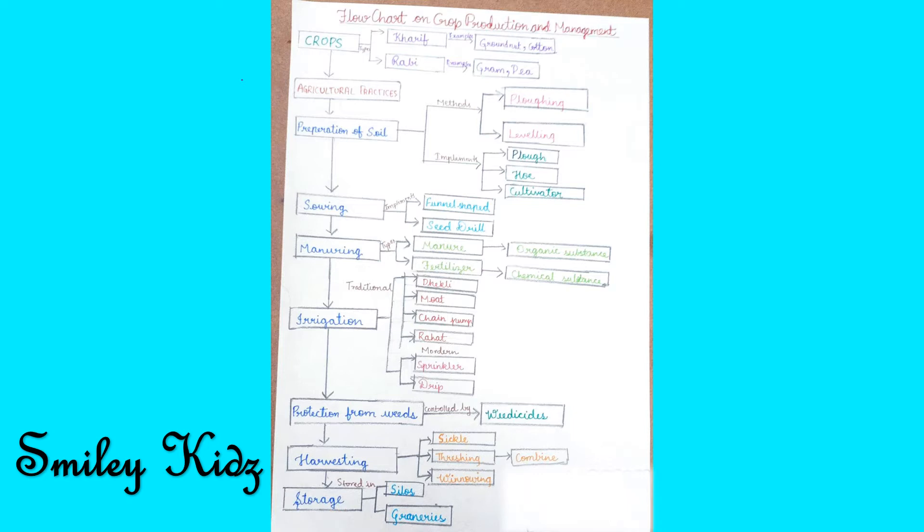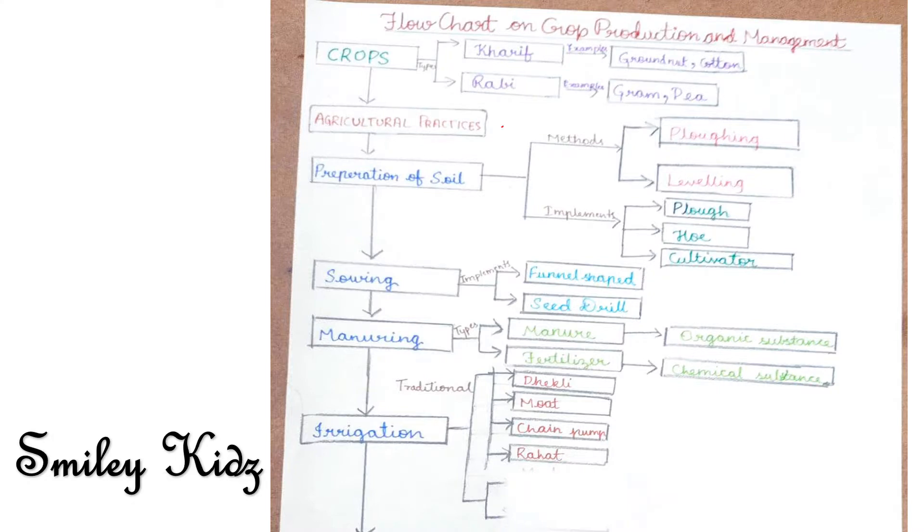Let's see about each one in detail. First, let's see about crops. What is a crop? The same kind of plants grown and cultivated at one place on a large scale is called a crop. There are two types of crops, namely Kharif crops and Rabi crops.